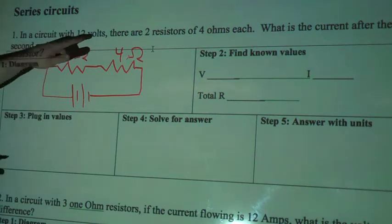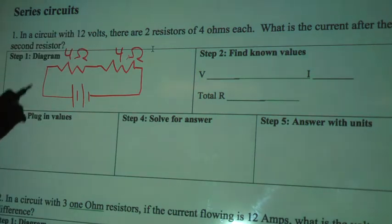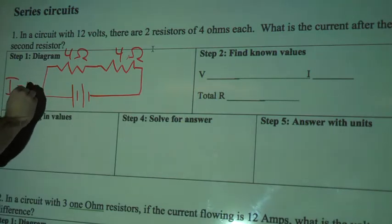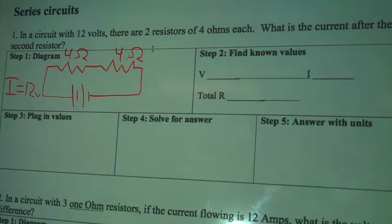We know that the circuit with 12 volts - 12 volts is current, so over here on the side I'm going to write I equals 12 volts. I'm sorry, voltage equals 12 volts. I would be current.